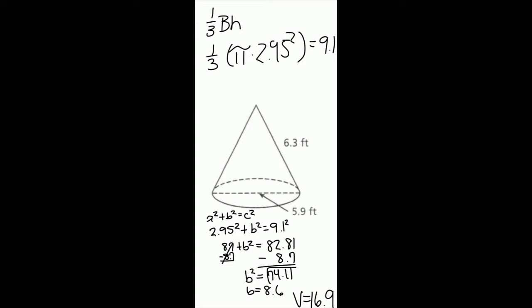The volume formula for a cone is one-third of the base times the height. First, find the area of the base, which is a circle.